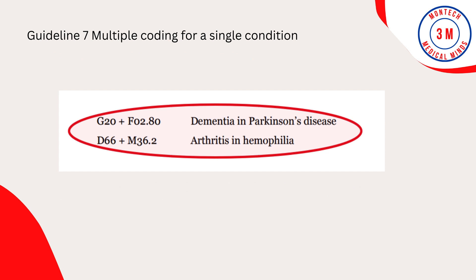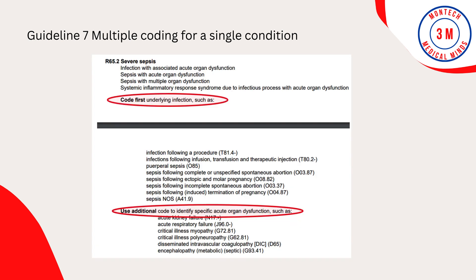Guideline 7: Multiple Coding for a Single Condition. In the tabular list, the need for dual coding is indicated by the presence of a use-additional-code note with the code for the underlying condition, and a code-first-underlying-condition note with the manifestation code. Examples: Dementia and Parkinson's disease are to be coded with both codes. Arthritis and hemophilia are to be coded with both codes. Severe sepsis is to be assigned with two or more codes — such as sepsis, severe sepsis, and organ failure if any. Sequencing of codes is based on the instructional guidelines of etiology and manifestations and the alphabetic index.